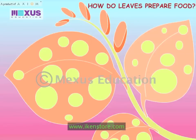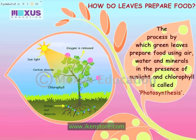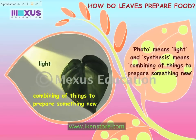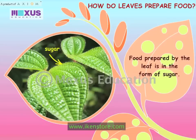The prepared food is in the form of simple sugar which provides energy for the growth of plants. Food made using air, water and minerals in the presence of sunlight and chlorophyll is called photosynthesis. Photo means light and synthesis means combining of things to prepare something new. Food prepared by the leaf is in the form of sugar.